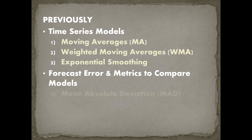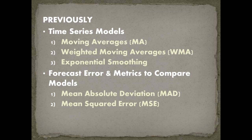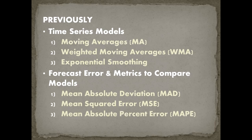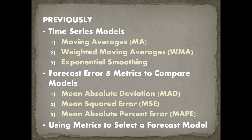We covered mean absolute deviation (MAD), mean squared error (MSE), and mean absolute percent error (MAPE) for comparing the models. Using these metrics we were then able to select which one of our forecasting models was most likely to make a good prediction for the future.